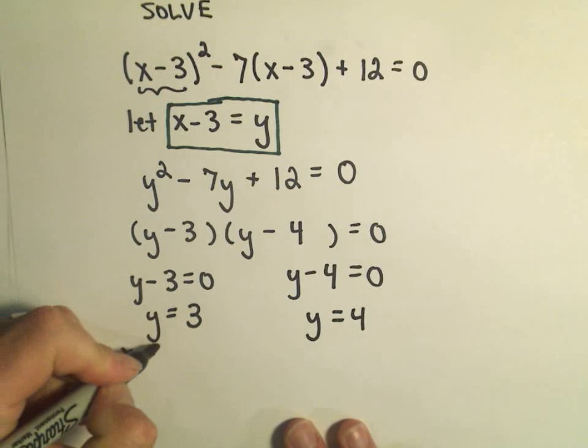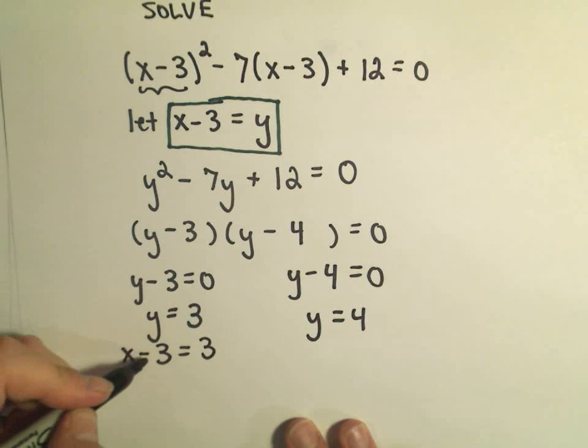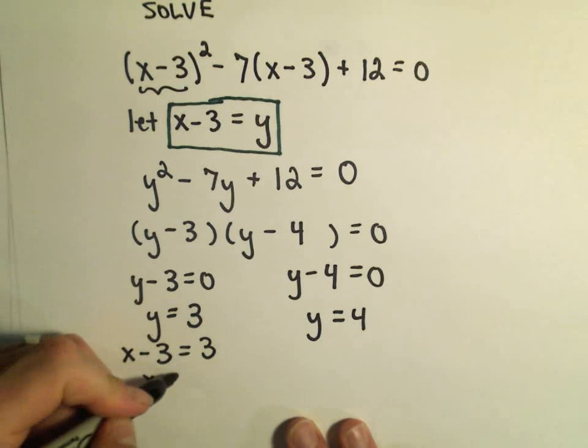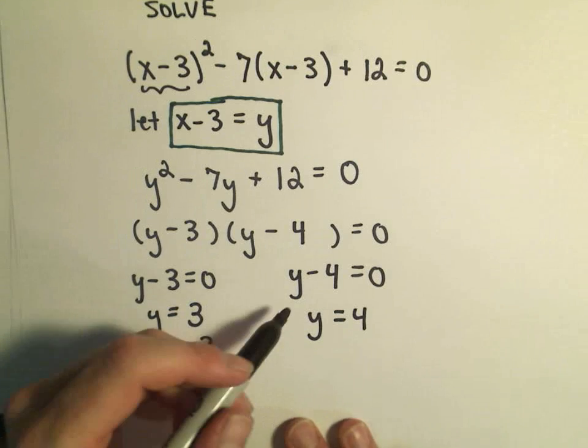So we said y is x minus 3, so I'm just replacing that on the left side, and that equals 3. If I add 3 to both sides, I'll get x equals 6 as my first solution.